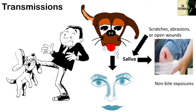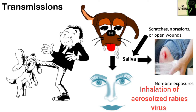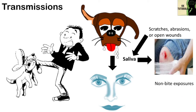Other modes of transmission aside from bites and scratches are uncommon. Inhalation of aerosolized rabies virus is one potential non-bite route of exposure, but except for laboratory workers, most people won't encounter an aerosol of rabies virus.